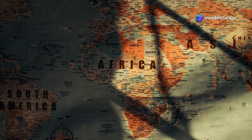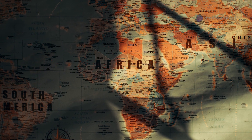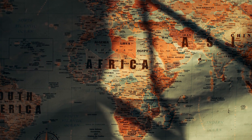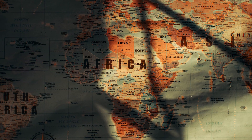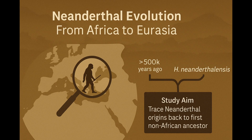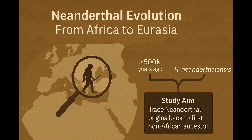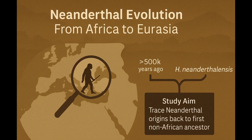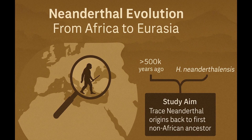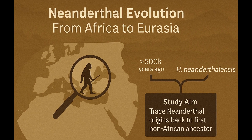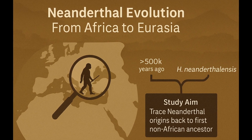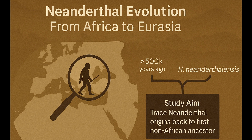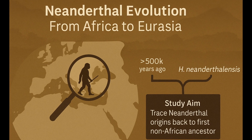According to current evidence, the common ancestor of Homo sapiens and the Neanderthals lived in Africa, and the two lineages separated more than half a million years ago. After that, the ancestors of the Neanderthal lineage left Africa and continued to evolve in Eurasia, while the ancestors of Homo sapiens remained in Africa.